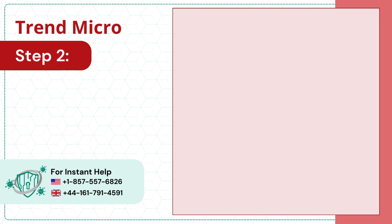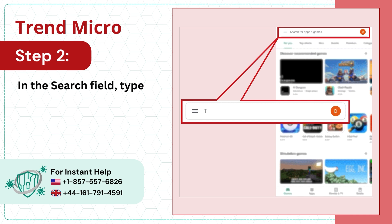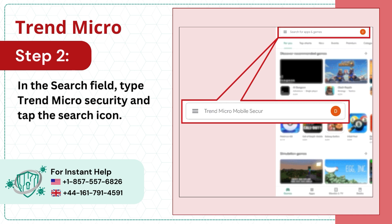Step 2: In the search field, type Trend Micro Security and tap the search icon.